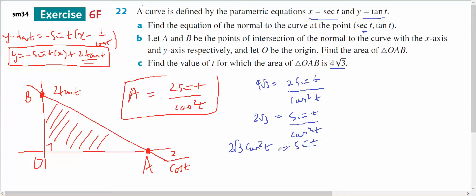I can't really solve these when I have different trigonometric functions, so I'm going to turn this into 1 minus sine. So 2 root 3, 1 minus sine squared of T, equals sine of T.